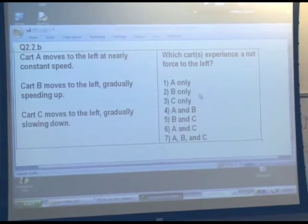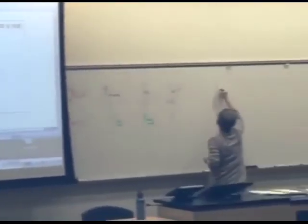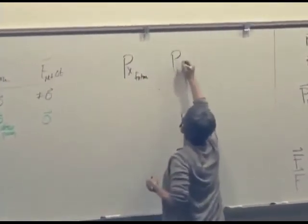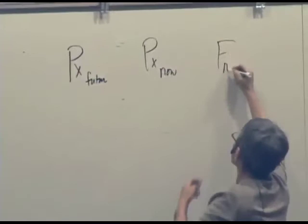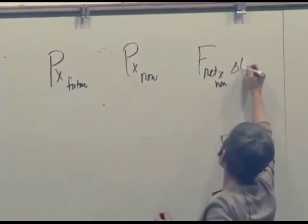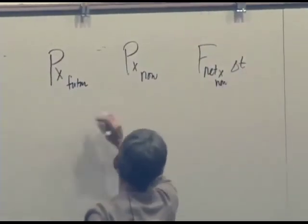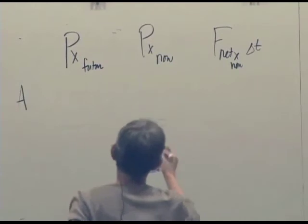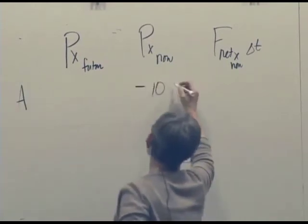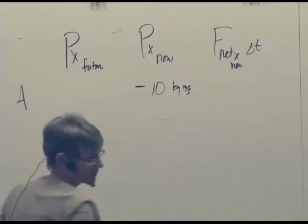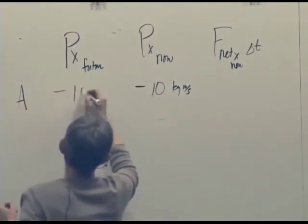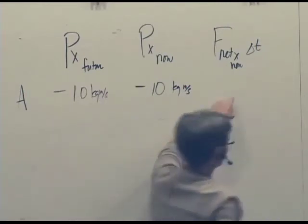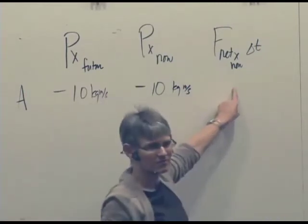So we could have made our possibilities, our table this way. We could just talk about the x-component of momentum. P_x now, F_net_x now. And so cart A, so it's moving to the left. So it would be minus 10 kilogram meters per second. We'll make up a number. And in the future, it's minus 10 kilogram meters per second. And so therefore, this must have been zero.